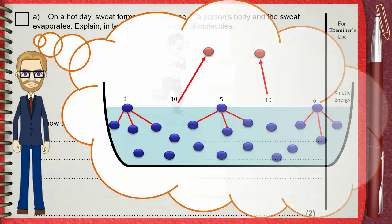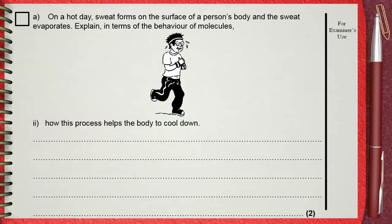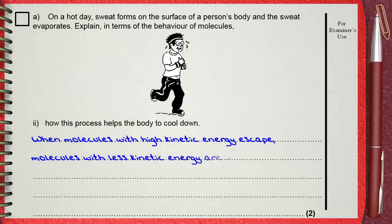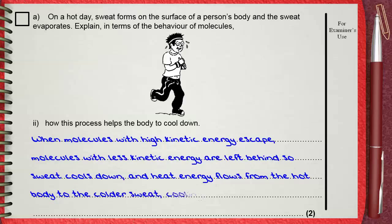So, if you want to explain why evaporation will cause a cooling effect on the body, when molecules with high kinetic energy escape, molecules with less kinetic energy are left behind, so sweat cools down, and heat energy flows from the hot body to the colder sweat cooling down the body.